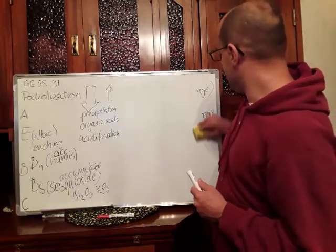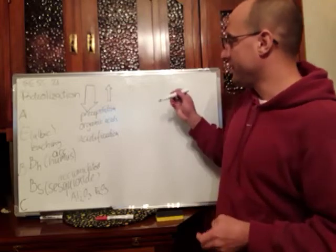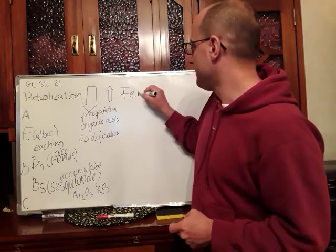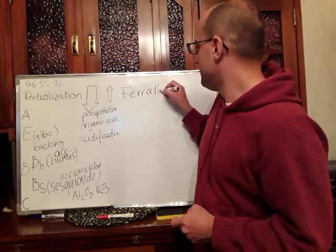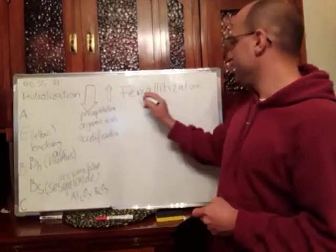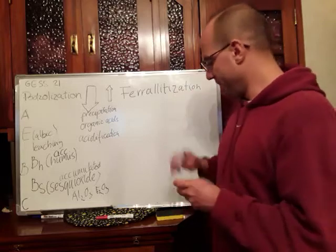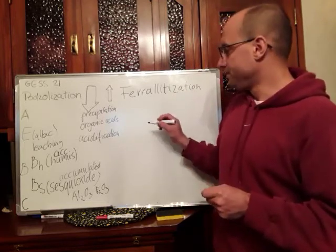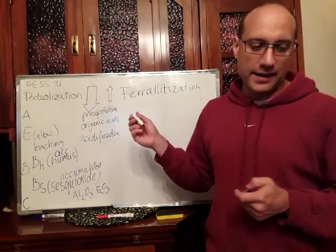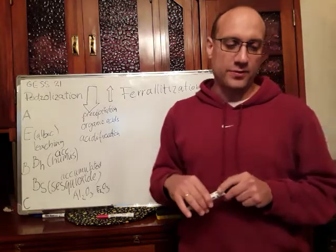So it's a different combination of the various processes that put together these types. Again this can be spelled as ferrallitization in some cases I found it that way, ferrallitization and so on. So what we will have here is again precipitation, organic acids, and acidification of the soil in the first place. So more rainfall than evapotranspiration.